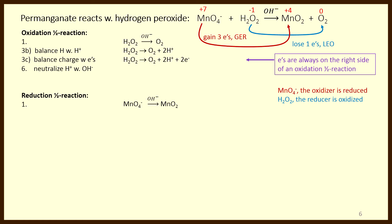If this reaction were in acidic solution, we would be done with this half-reaction. But this is basic solution, so there are more steps. In basic solution, hydrogen ion really doesn't exist. What we do is neutralize all the hydrogen ion by adding an equal number of hydroxide ions — I add two hydroxides here to neutralize the two hydrogen ions and make two molecules of water. On the right-hand side, 2 H+ becomes 2 H2O. As many hydroxides as you add to one side must be added to the other side at the same time, otherwise you unbalance the equation. Now we have a balanced equation in basic solution.